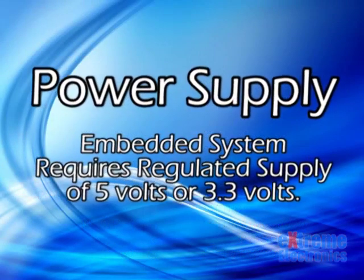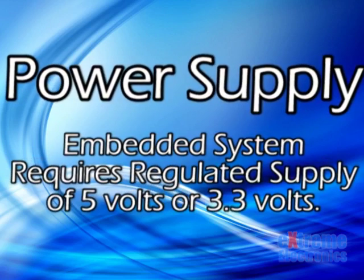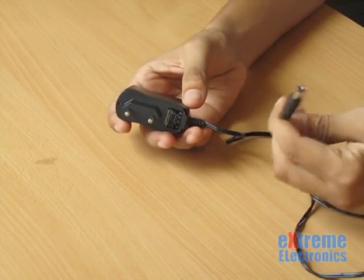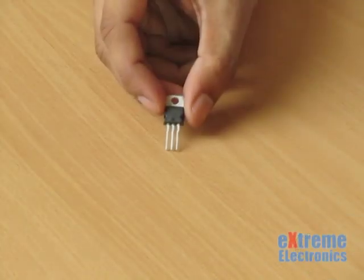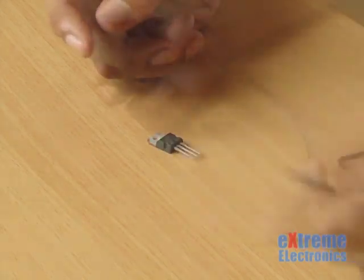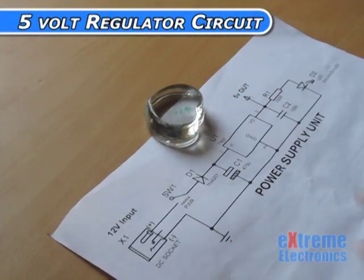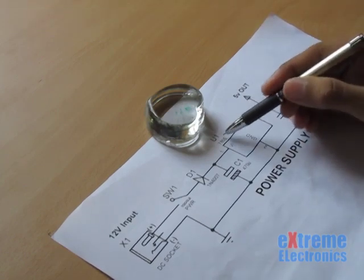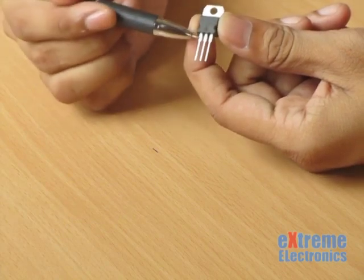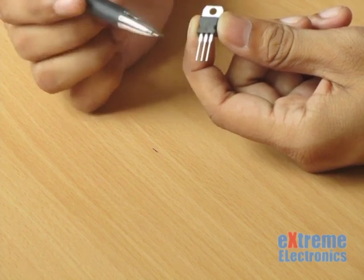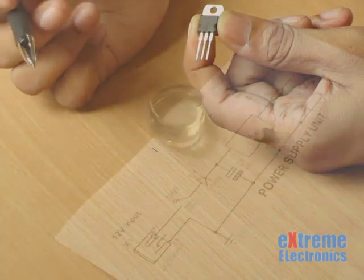First let's complete the power supply part. Any embedded device requires a regulated power supply of 5 volts or 3.3 volts. Normally we do not have a wall adapter or battery that provides a regulated supply, so we use a voltage regulator IC like a 7805 to get a clean regulated 5 volts from a wall adapter of 9 or 12 volts. At the heart of the circuit is the 7805 IC. If you hold this IC such that the printing is facing you and the leads are downwards, then the leftmost pin is pin 1, followed by pin 2, and finally pin 3.